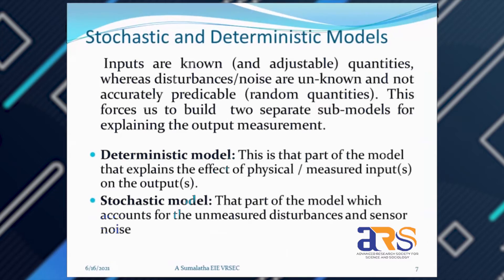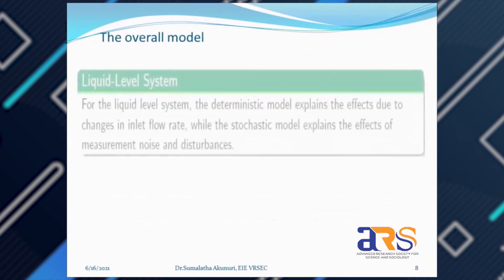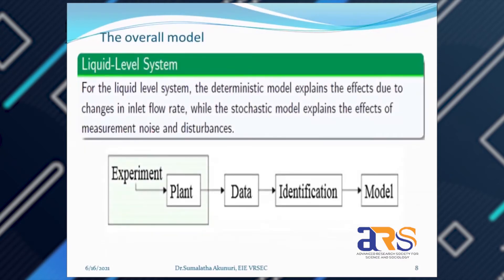Models are categorized into two parts: deterministic models and stochastic models. Deterministic models explain the effect of physical or measured inputs on outputs. Stochastic models give information regarding unmeasured disturbances and sensor noise. In every process there are direct and indirect impacts of disturbances — a wanted disturbance such as a step, ramp, or impulse input, and unwanted disturbances that create different model behaviors. This paper specifically investigates what effects disturbances have on collected experimental data and the resulting model.